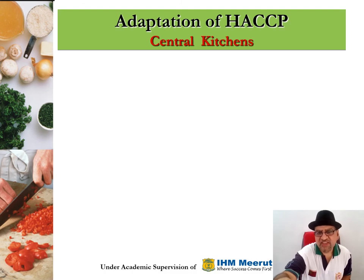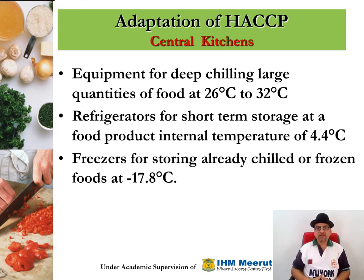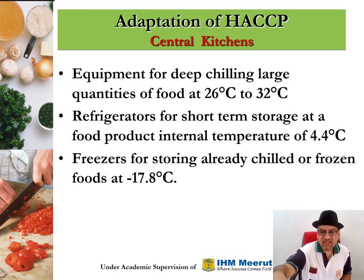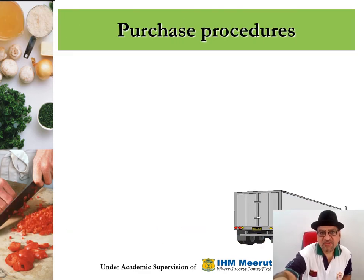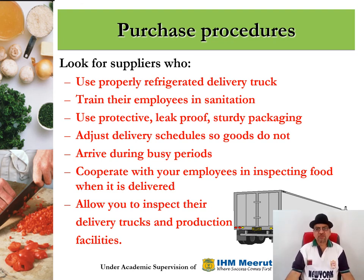Adaptation of HACCP for central kitchens (commissary kitchens): deep chilling large quantities of food at minus 26 to minus 32 degrees centigrade; refrigerators for short-term storage at a food product internal temperature of 4.4 degrees centigrade; refrigerators for storing already chilled or frozen foods at minus 17.8 degrees centigrade. For transportation and purchase procedures: look for suppliers who use properly refrigerated delivery trucks, train their employees in sanitation, use protective leak-proof sturdy packaging, adjust delivery schedules so goods do not arrive during busy periods, and allow you to inspect their delivery trucks and production facilities.